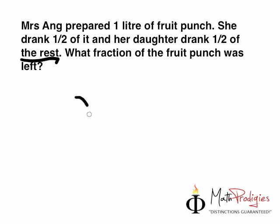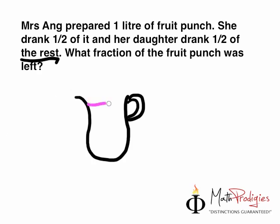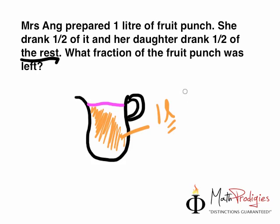Just to help you imagine, I'm going to draw a jug. This is a jug with fruit punch — normally it's about pink colour. So this is 1 litre of fruit punch. By the way, 1 litre is a measurement. If you take a look at your drinks, it will say 500 ml or 1.5 litres. Just to give you an idea, 1 litre equals 1,000 ml. I want you to answer this question.